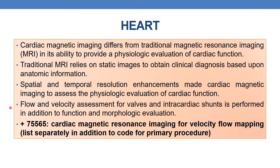The code to assess flow and velocity is add-on code +75565. The PLUS indicates it is an add-on code. The description is cardiac magnetic resonance imaging for velocity flow mapping. List separately in addition to the code for the primary procedure, as it is an add-on code.